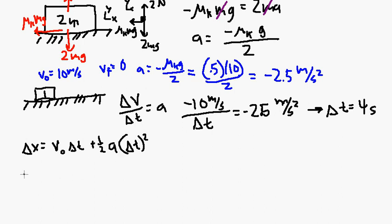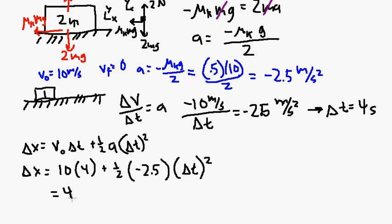So delta X equals 10 times 4, that's 10 meters per second times 4 seconds, plus 1 half, and then our acceleration was negative 2.5 meters per second squared times delta T squared. So this is going to equal 40, and this is going to be negative 2.5 times 4 times 4, so this is 16 here.